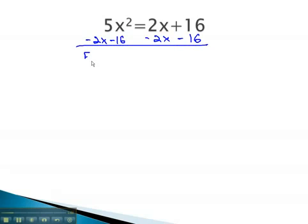There are no like terms, so we have 5x squared minus 2x minus 16 equals zero.